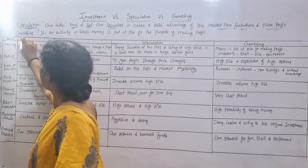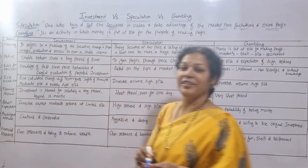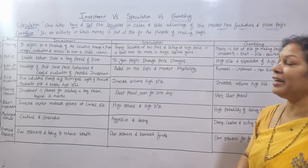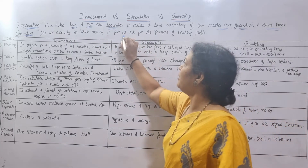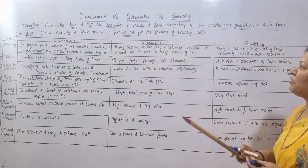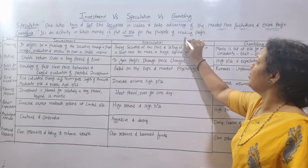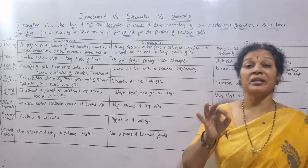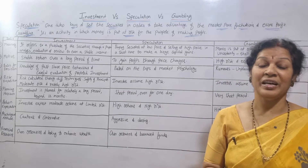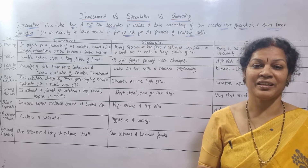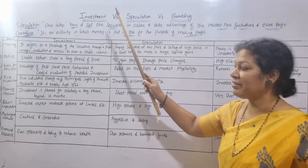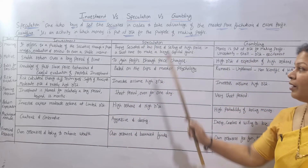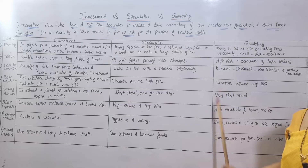Gambling is an activity in which money is put at risk for the purpose of making profit. They also want to earn profit, but the money is at risk. The probability of getting profit in gambling is always less compared to speculation and investment, and it involves uncertainty, thrill, risk, and excitement.